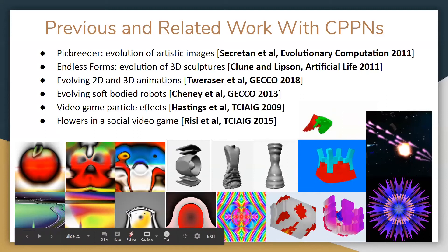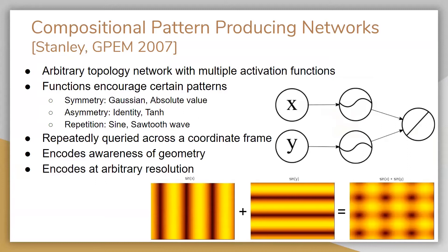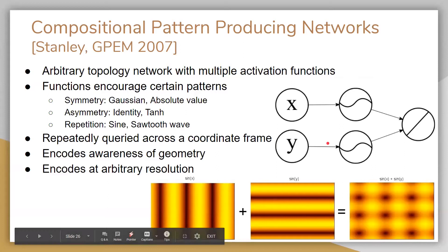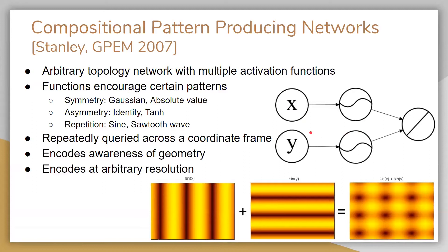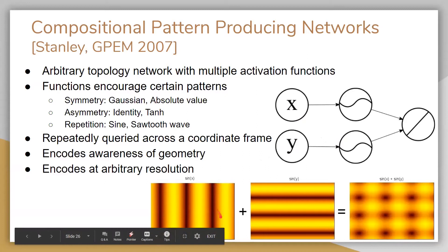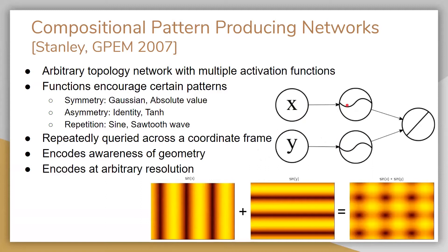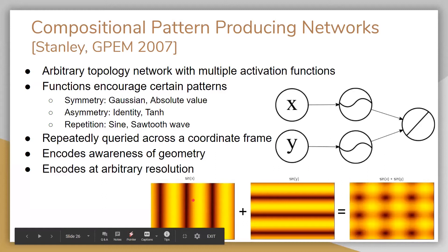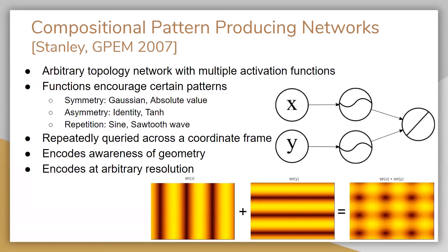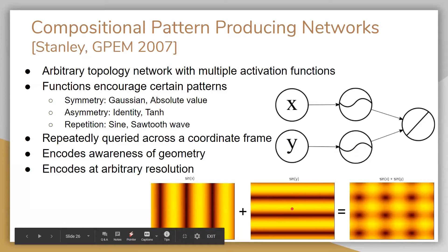So what are CPPNs and how do they work? They're neural networks with arbitrary topologies that allow a mix of different activation functions in every neuron. Different functions can represent different patterns — symmetry, asymmetry, or repetition. Given such a network, you query it across some coordinate frame. With x and y inputs, the output is pixel intensity. If the input to a neuron is x going into a sine function, the output intensity is basically sine of x. If y is also going into a sine, that's sine of y.